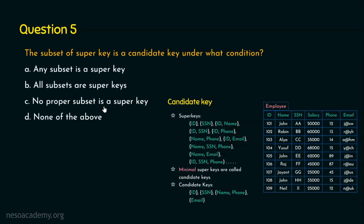Option C — no proper subset is a super key — is correct. Consider the set {name, SSN, phone number}. Its subsets include name alone, name and SSN, and name and phone number. Here name and phone number is a subset that itself can be a key, but the superset has an additional attribute SSN. So the candidate key is the minimal set where no proper subset is itself a super key. Option C is the right answer: the subset of a super key is a candidate key when no proper subset is a super key.